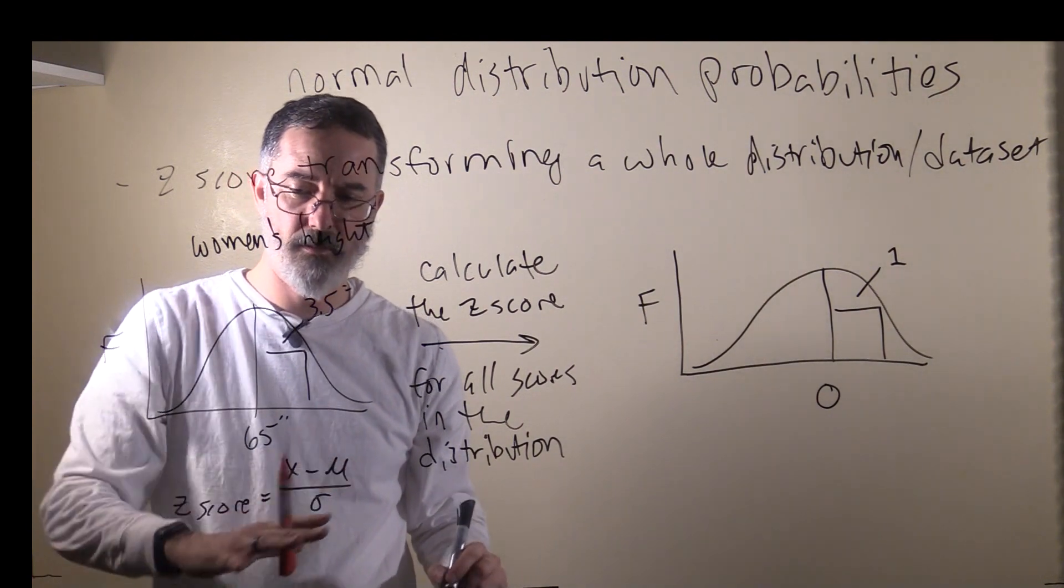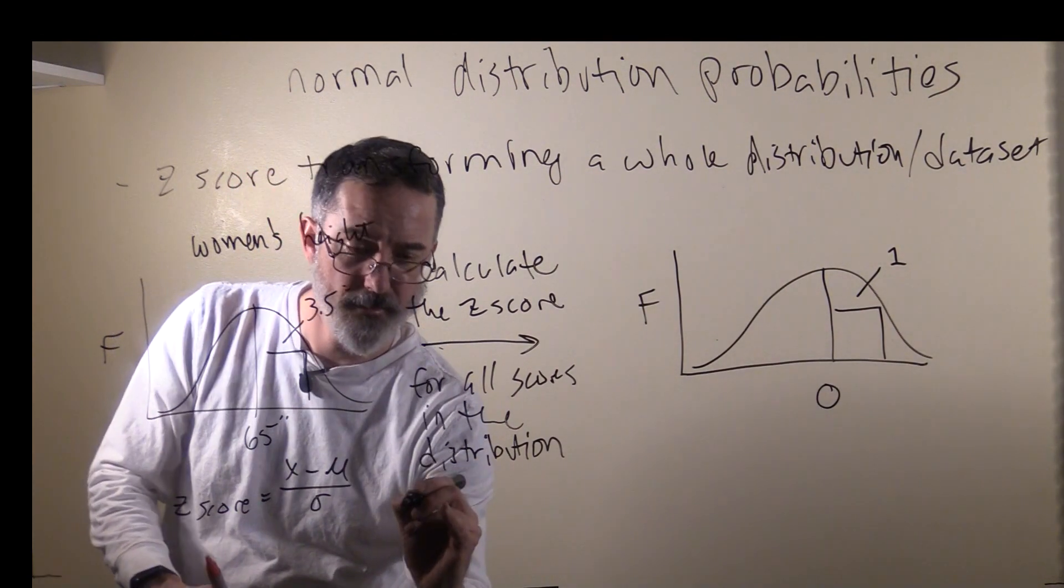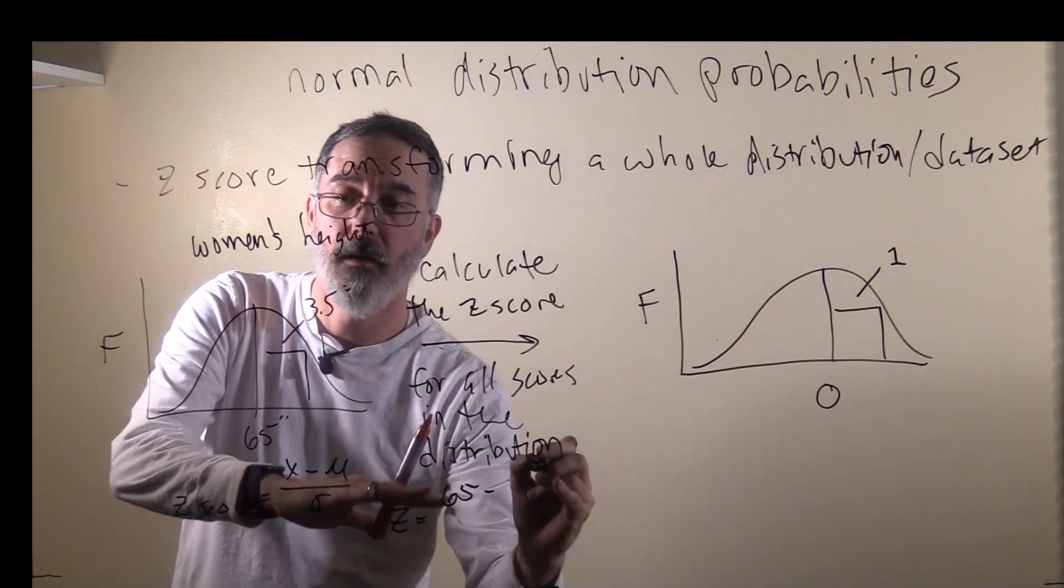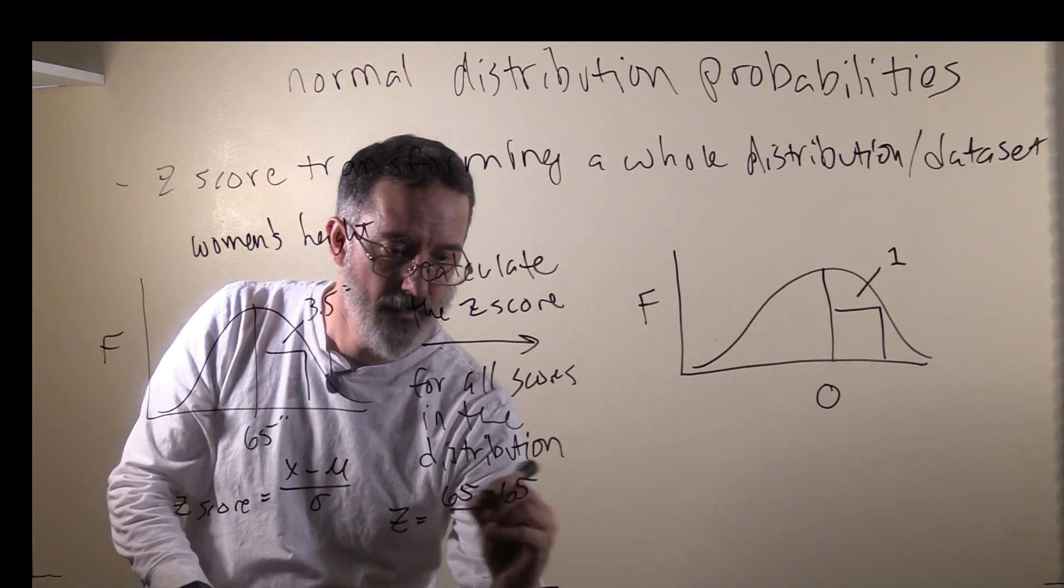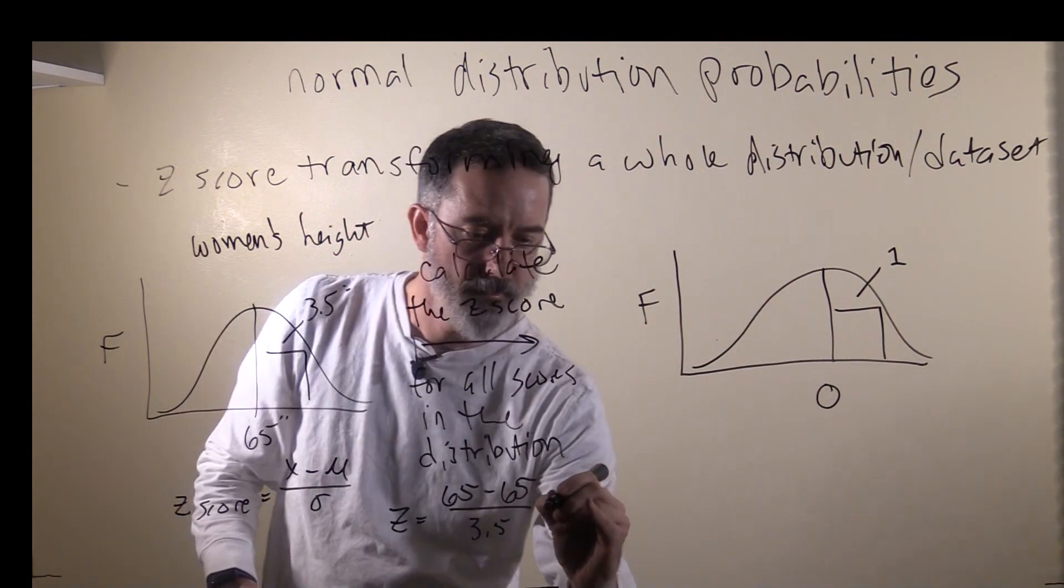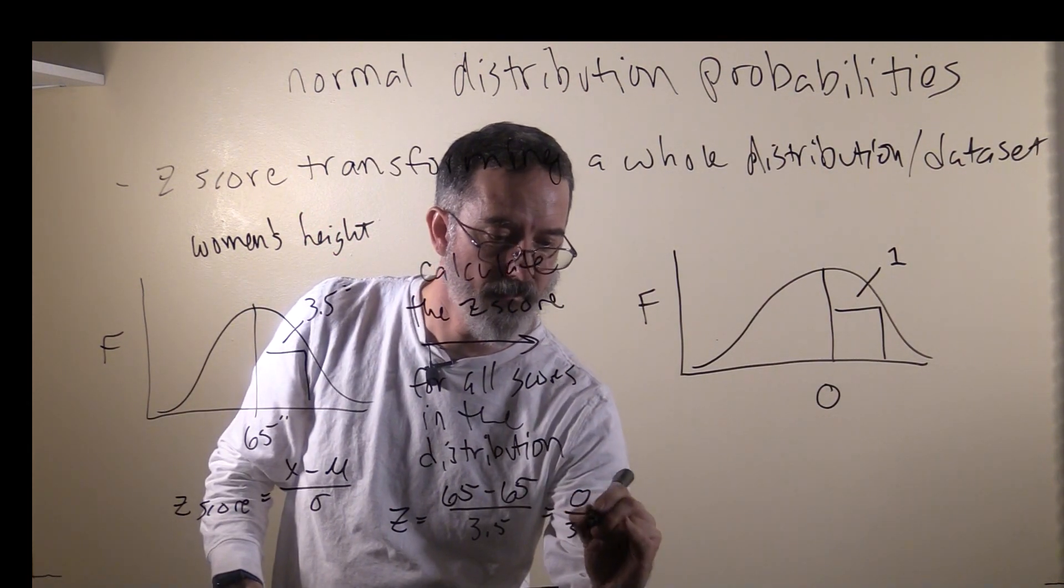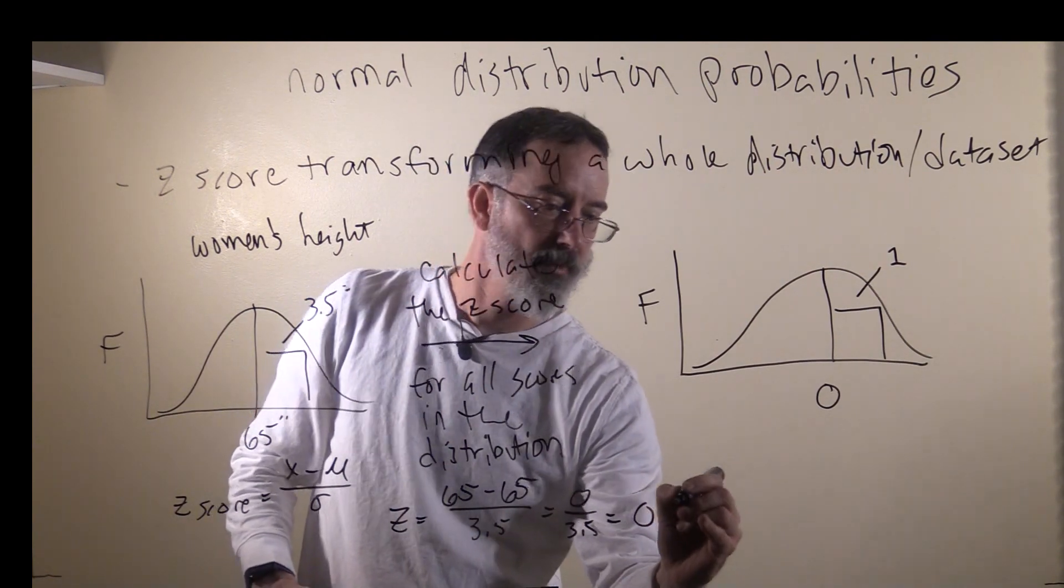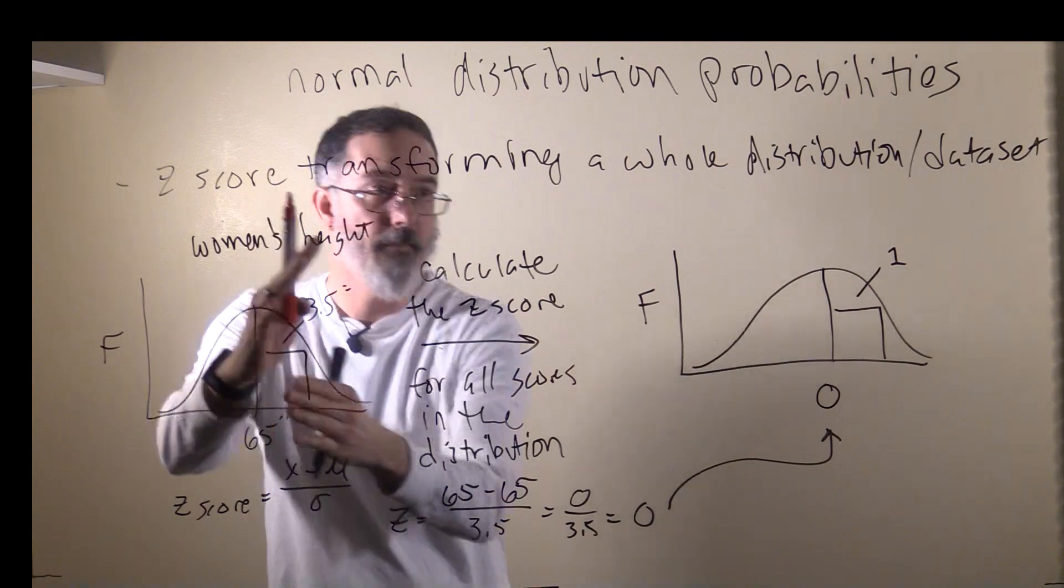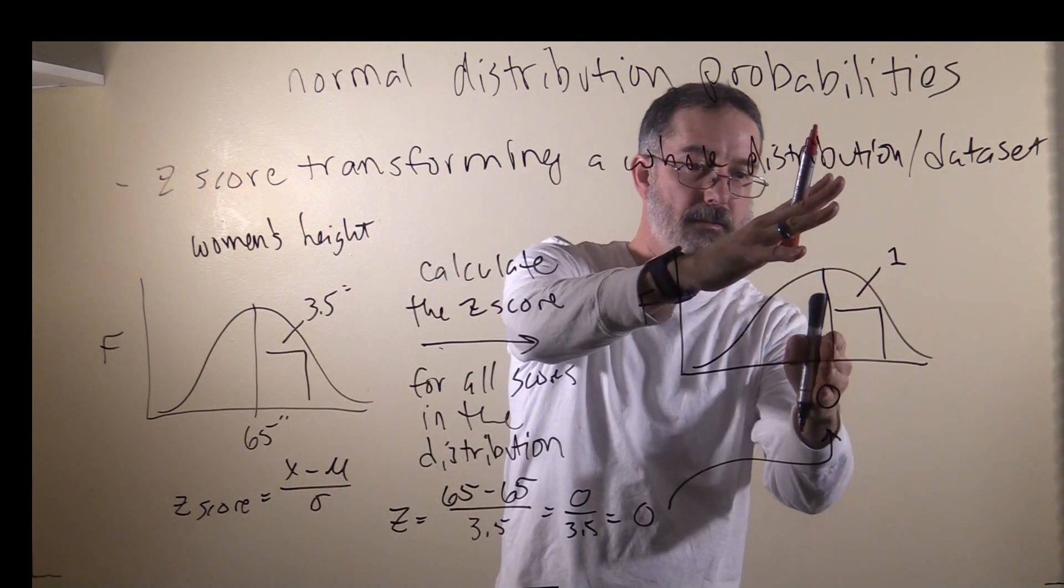If we look at the women whose raw score is 65 inches, their z is going to be 65 minus the mean, which is 65, divided by the standard deviation, which is 3.5. They're going to be 0 divided by 3.5. Their z-score is going to be 0. That's where all the women at that height are going to end up, in the middle here.